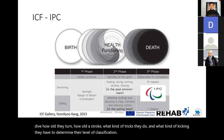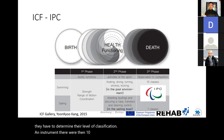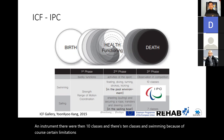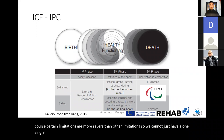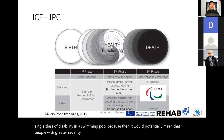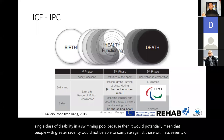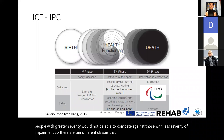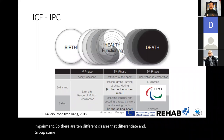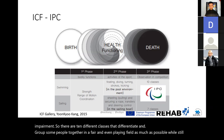In swimming there are ten classes, because certain limitations are more severe than others. You cannot have one single class of disability in a swimming pool because people with greater severity would not be able to compete against those with less severity of impairment. The ten different classes differentiate and group people together in a fair and even playing field as much as possible, while still excelling in sports competitions.